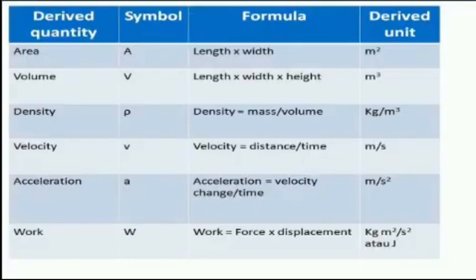Physical quantities which depend on one or more fundamental quantities for their measurement are called derived quantities. Examples include area, volume, density, velocity, acceleration, and work. The formulas and derived units are shown in this slide.